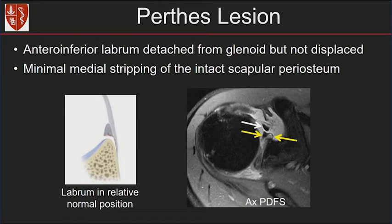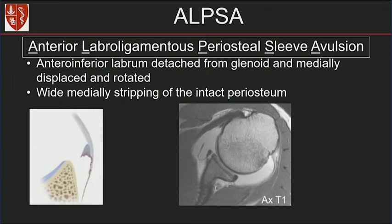Notice the MGHL anteriorly — always identify your MGHL when looking at anterior labral pathology. An ALPSA lesion stands for anterior labral ligamentous periosteum sleeve avulsion. The anterior inferior labrum is detached from the glenoid and medially displaced — unlike Perthes where the labrum is not displaced. You get wider stripping of the intact periosteum. On MR images, you can see the anterior inferior labrum is detached and the periosteum is stripped, allowing contrast to fill into that gap. This is your ALPSA lesion.